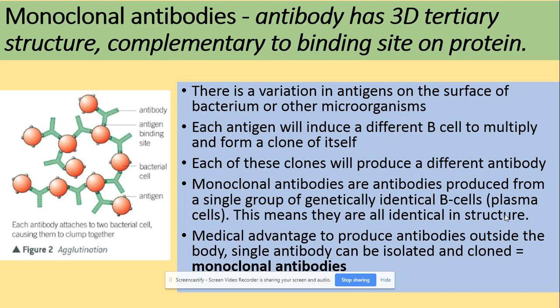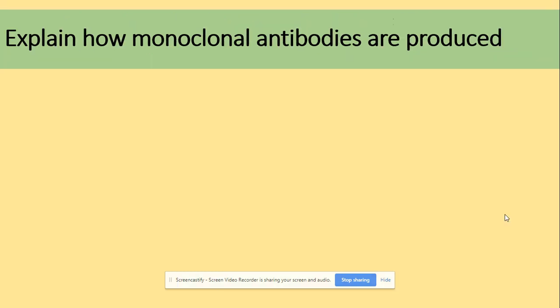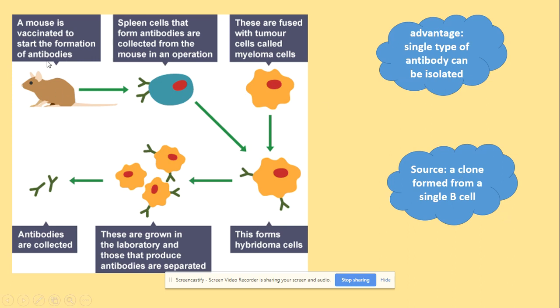There are many uses of monoclonal antibodies. In medicine, we can produce them outside of the body, providing huge benefits. So how are they actually produced? We use a mouse that was vaccinated — given a dead or inactive form of the antigen to produce antibodies. The spleen cells from the mouse are then collected. They are fused with tumor cells — myeloma cells.